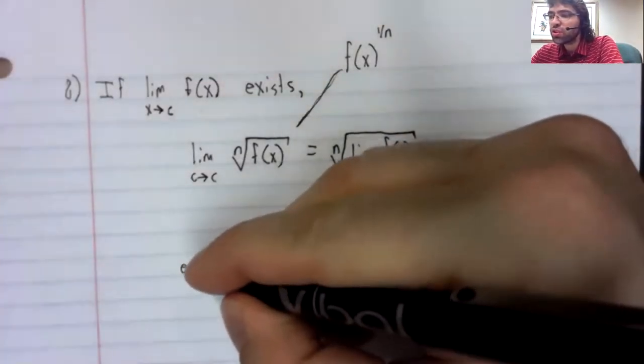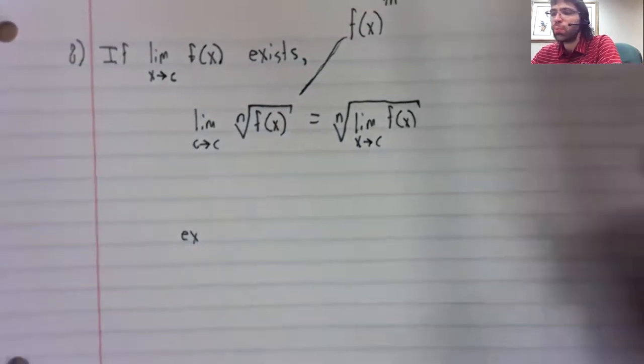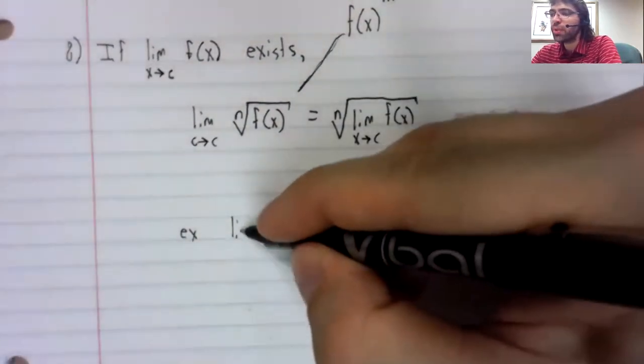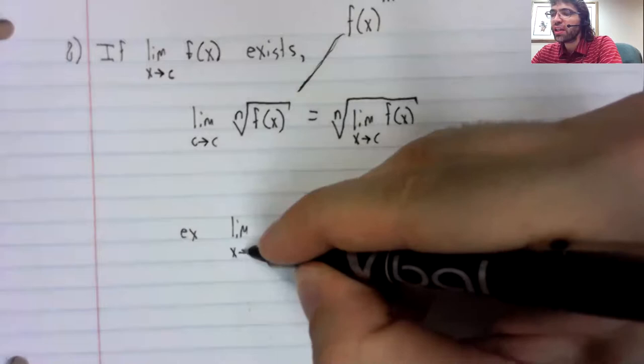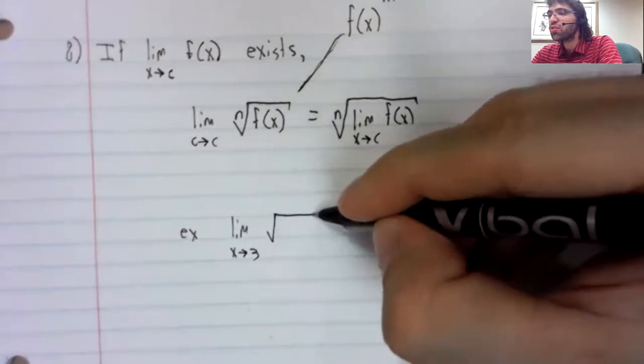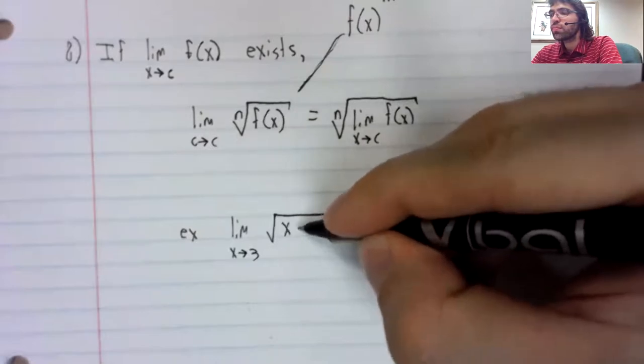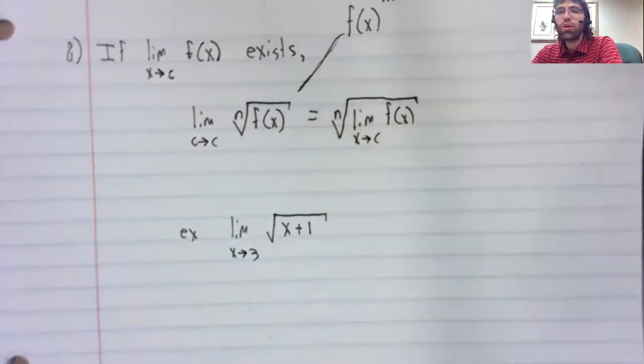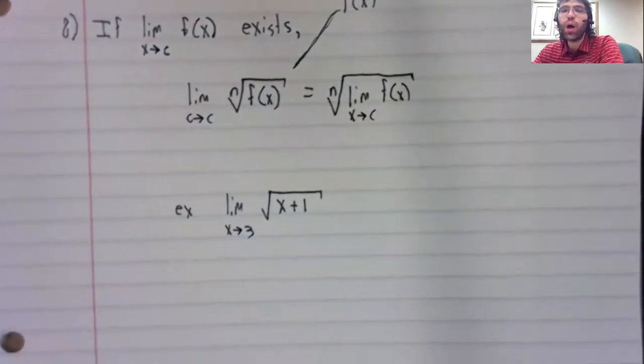So for example, the limit as x approaches 3 of the square root of x plus 1.